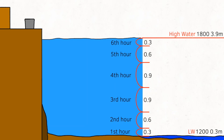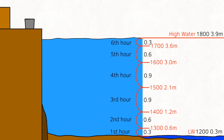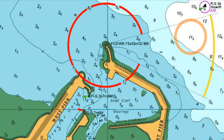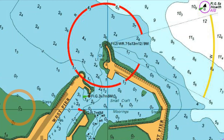Working from the bottom and adding the twelfths as we go: at one o'clock we would have 0.6 meters of depth, at two o'clock 1.2 meters of depth, at three o'clock 2.1 meters of depth, at four o'clock 3.0 meters of depth, at five o'clock 3.6 meters of depth, and then one last twelfth bringing it up to high water at six o'clock. So the tidal height at five o'clock is 3.6 meters. I can apply that to any of the depths on my navigation chart by adding it to those numbers, or subtract a drying height from it to get my answer for that time.